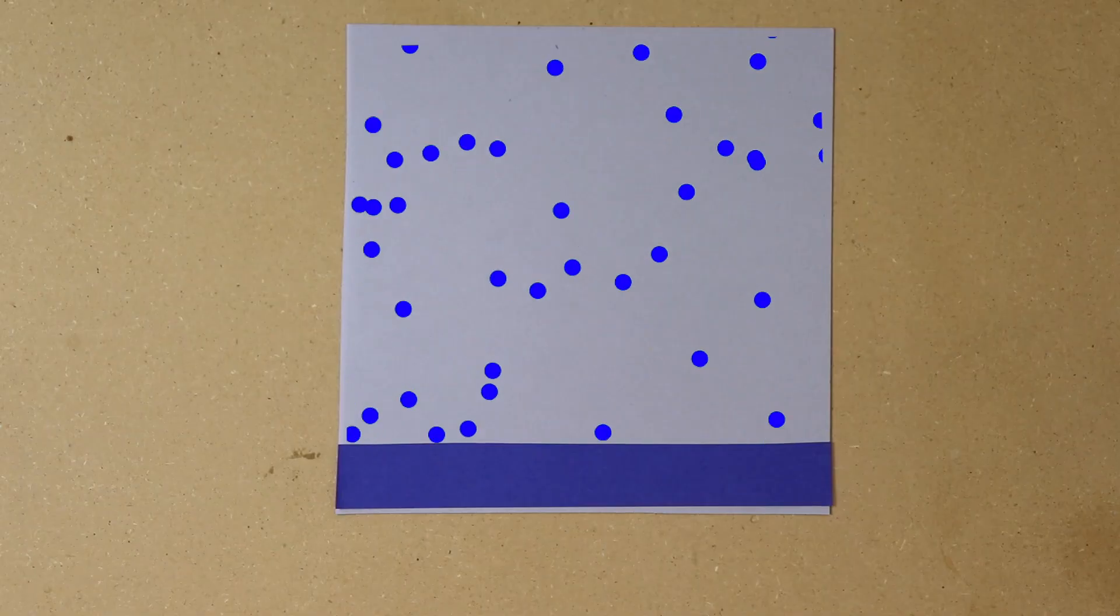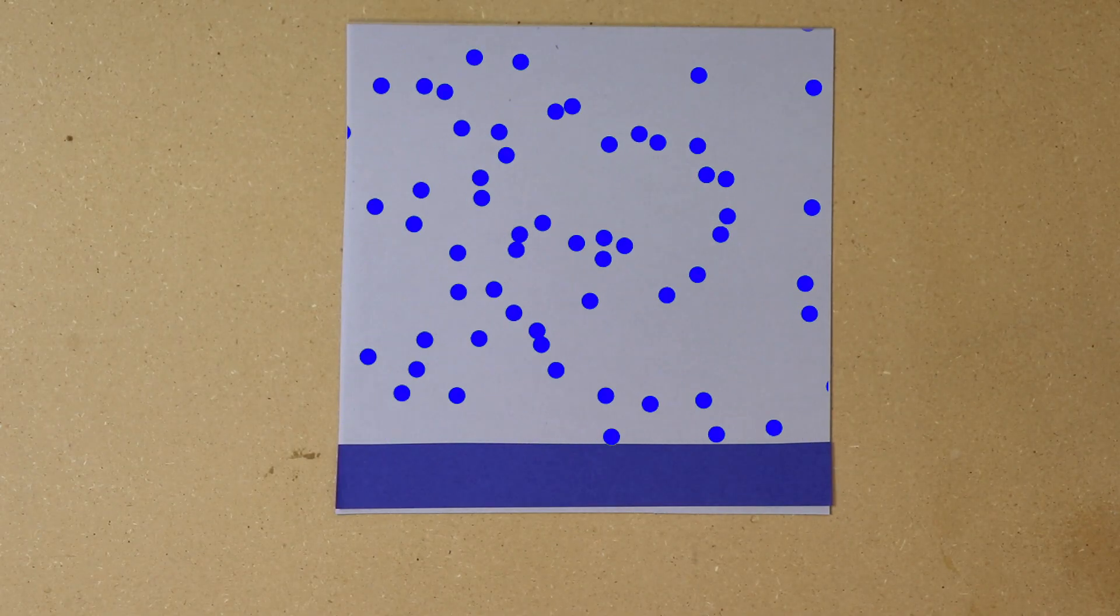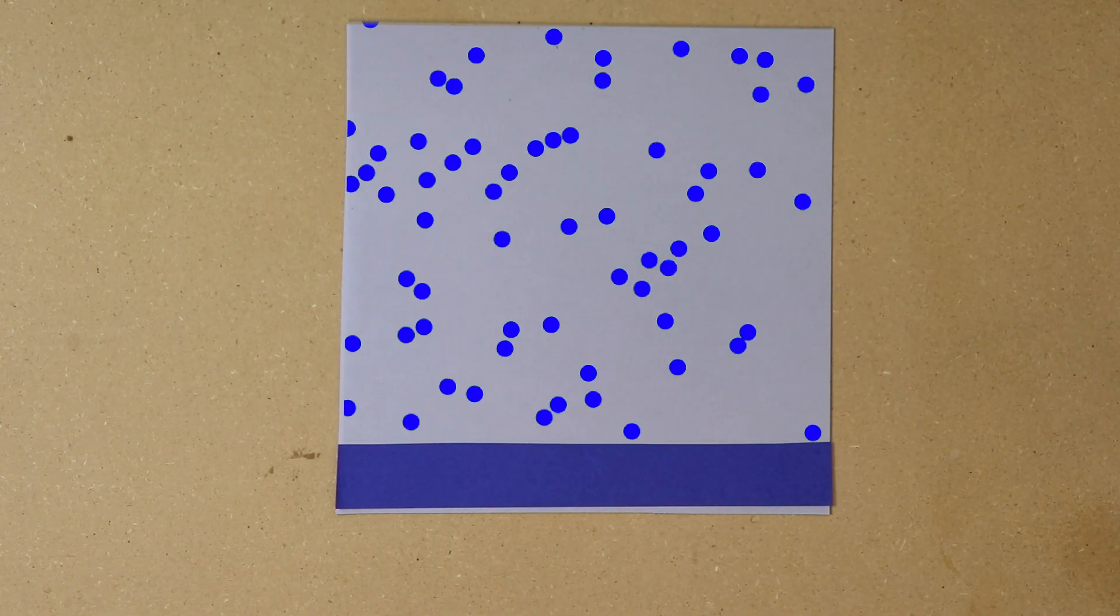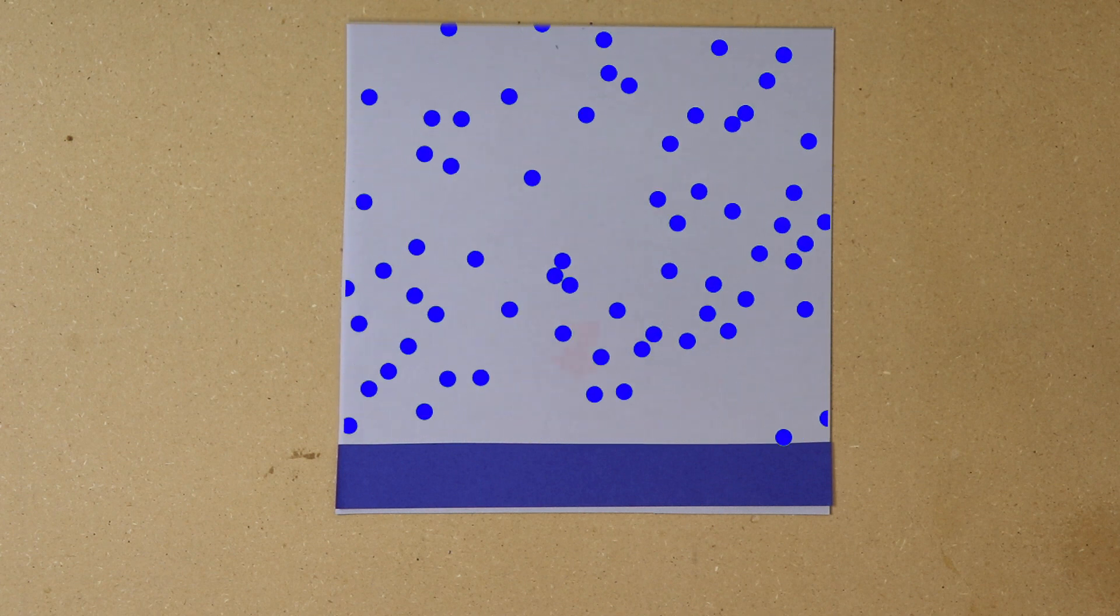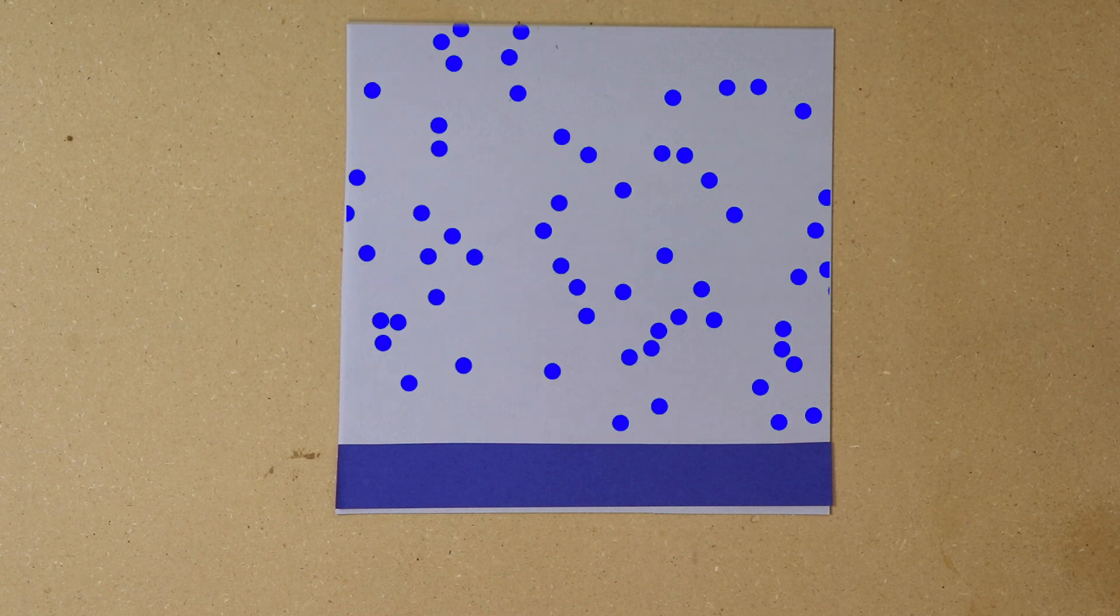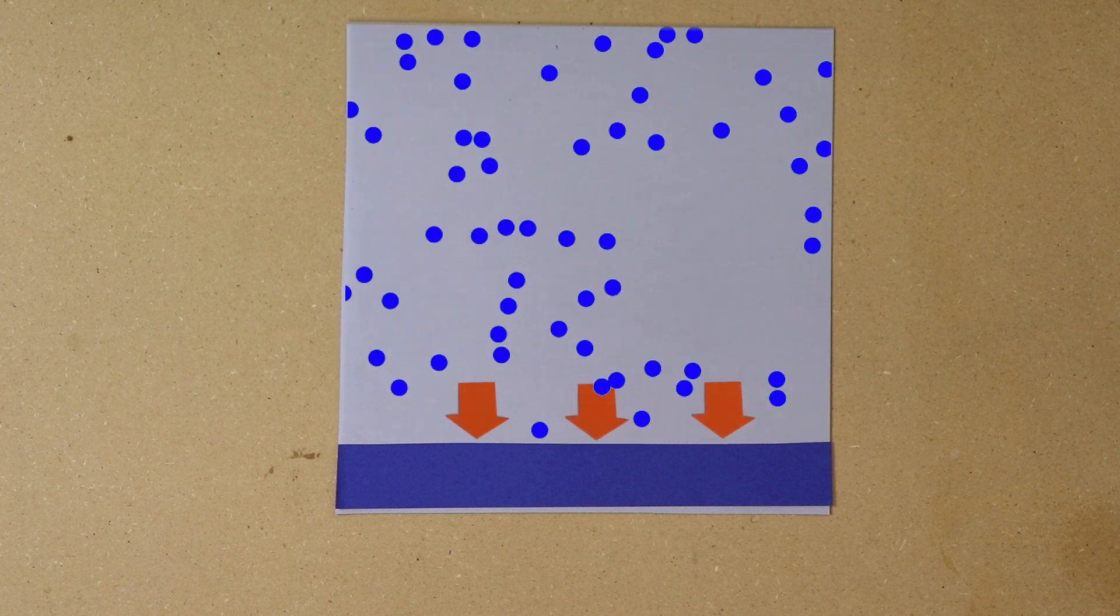So watch what happens when all the air particles are moving in one direction. Most of their energy goes into their movement from left to right, and there are less collisions hitting the surface, so there's actually less force in this direction and less pressure on the surface.